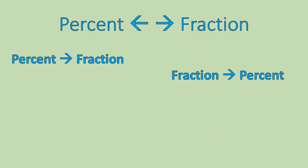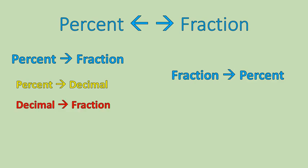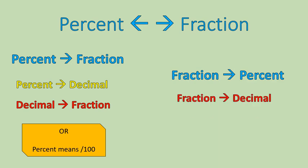In our final section, we'll talk about percent to fraction. When changing a percent into a fraction, you can first change the percent into a decimal, and then the decimal into a fraction. Or, remember that percent means out of 100. Going the other way — fraction to percent — you go fraction to decimal, then decimal to percent. This is a combination of all the skills we've covered.